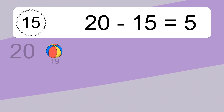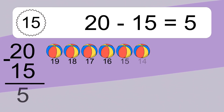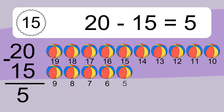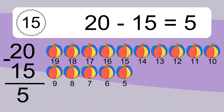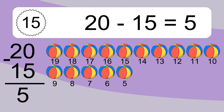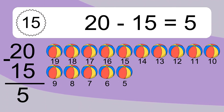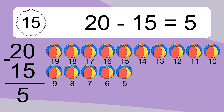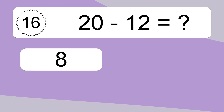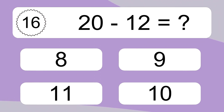20 minus 15 equals 5. Let's count it. 19, 18, 17, 16, 15, 14, 13, 12, 11, 10, 9, 8, 7, 6, 5.